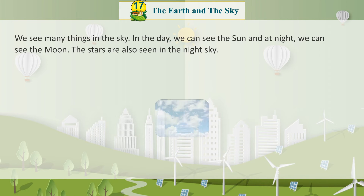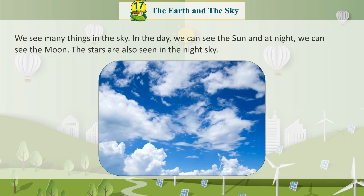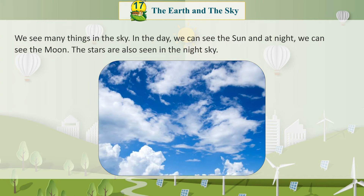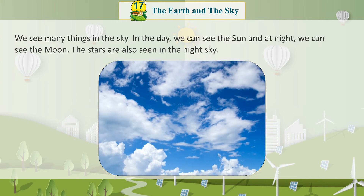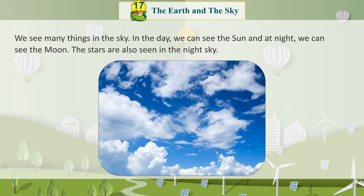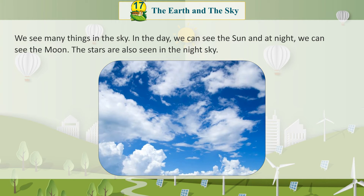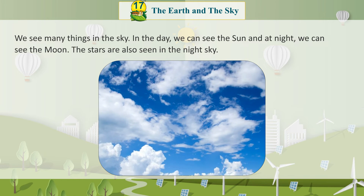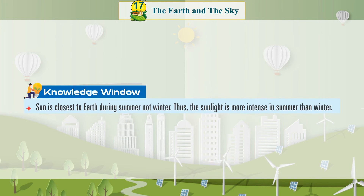Sky: We see many things in the sky. In the day, we can see the sun, and at night, we can see the moon. The stars are also seen in the night sky. Knowledge Window: The sun is closest to the earth during summer, not winter. Thus, the sunlight is more intense in summer than in winter.